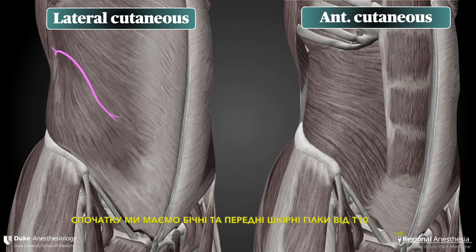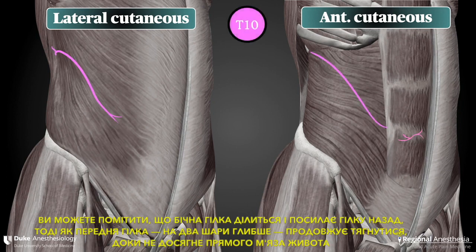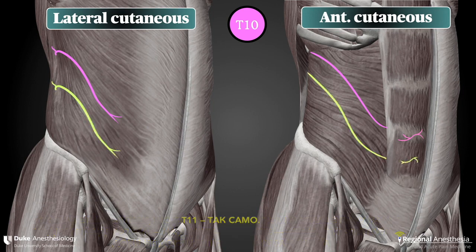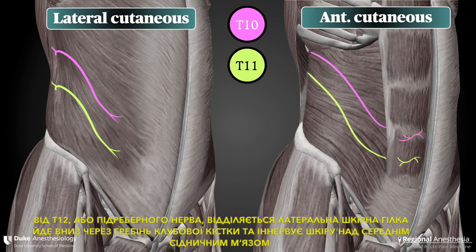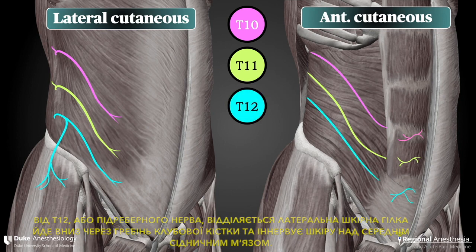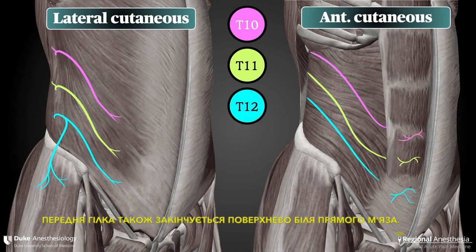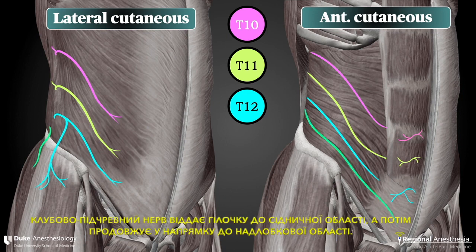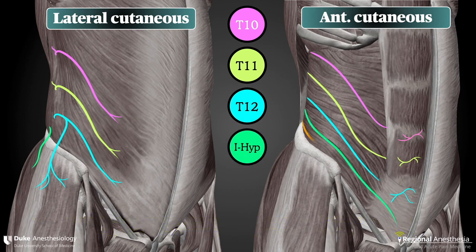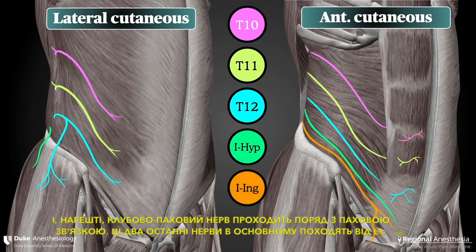First, we have the lateral and anterior cutaneous branches of T10. You can see that the lateral branch divides and sends a twig posteriorly, while the anterior branch, two layers deeper, keeps on trucking until it pops out through the rectus. T11 is very much the same story. The T12 or subcostal nerve sends a lateral cutaneous branch down over the iliac crest and innervates the skin over the gluteus medius. The anterior branch also ends up terminating superficial to the rectus. The iliohypogastric nerve has a twig to the gluteal region before continuing on towards the suprapubic area. And finally, the ilioinguinal nerve runs alongside the inguinal ligament. These last two nerves are primarily derived from L1.